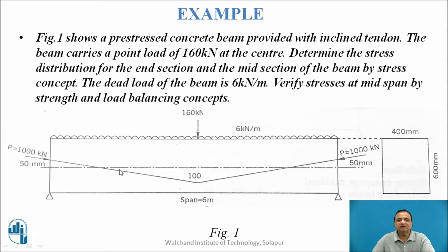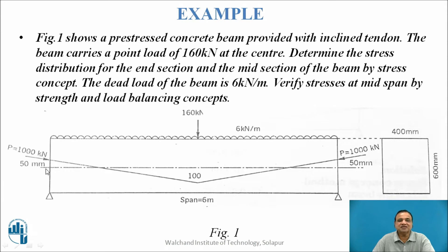The cross-section of the beam is 400 mm wide and 600 mm deep. The span is 6 meters, subjected to a point load of 160 kN at the center and a UDL of 6 kN per meter as dead load. The tendon has an eccentricity of 50 mm above the neutral axis at the ends and 100 mm eccentricity below the neutral axis at the center.